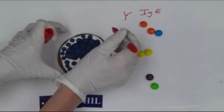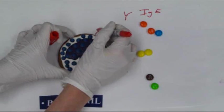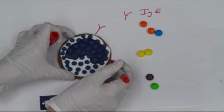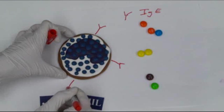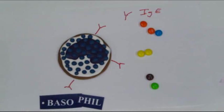What happens is these IgEs will then place themselves on the surface of a basophil. So the first time you're exposed to an antigen, to something you're allergic to, this is not such a problem.